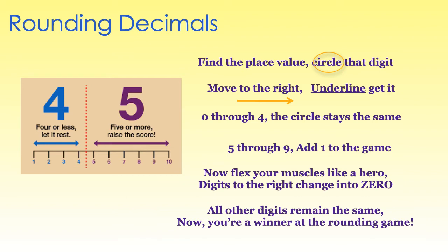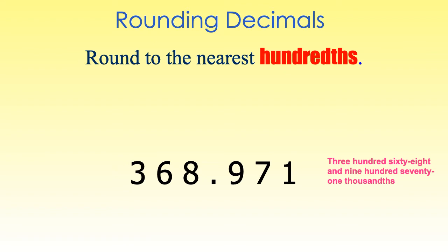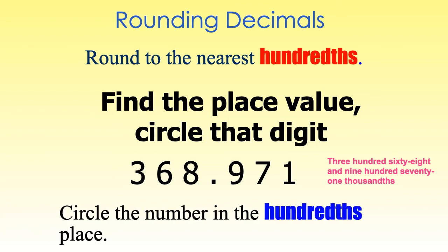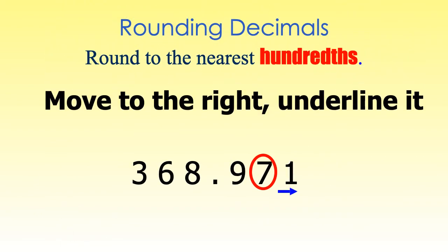Using those steps, we should be able to round any number. Let's take a look at this. This number is 386 and 971 thousandths, and we want to round this number to the nearest hundredths place. Our first step tells us to find the place value and circle that digit, so we must circle the digit in the hundredths place. The digit in the hundredths place is the digit seven. Now move to the right and underline it — the digit to the right of the seven is the digit one.